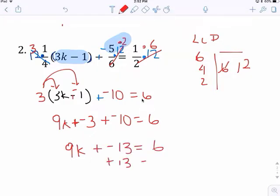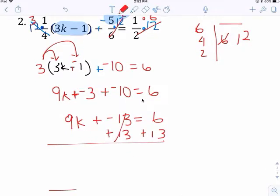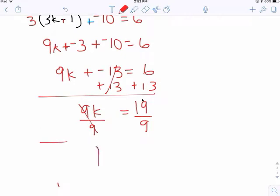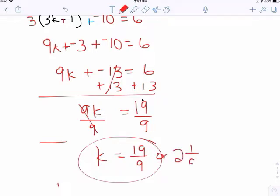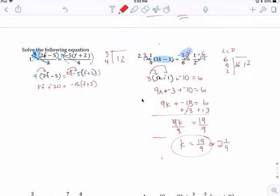Add 13. Add 13. 9k equals to 19. K equals to 19 over 9. Right there. Or 2 and 1 ninth. Goes in twice with a remainder of 1. One solution.